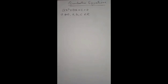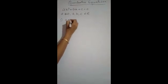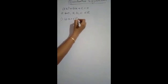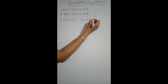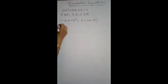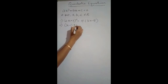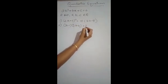Now let's check a few equations to see whether they are quadratic or not. The first one: 2x plus 3, the whole square, is equal to 4 into 3x minus 5. The second one: x minus 1 into 3x minus 4 is equal to 7.